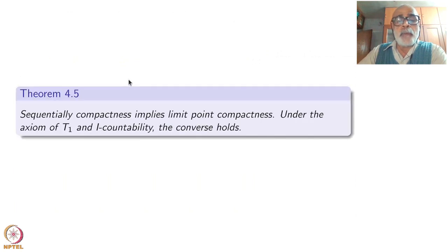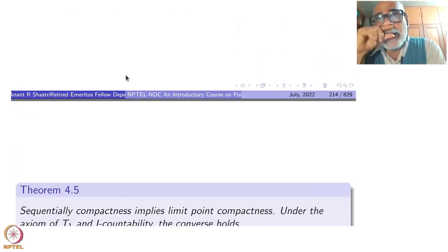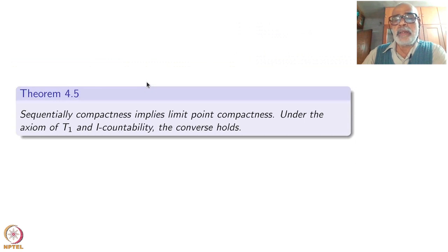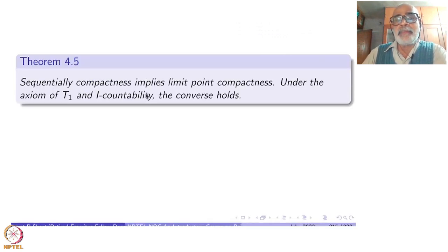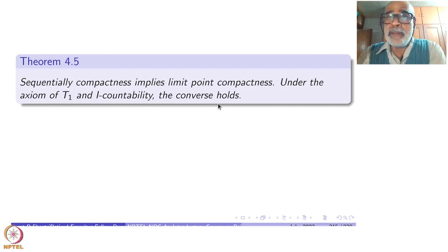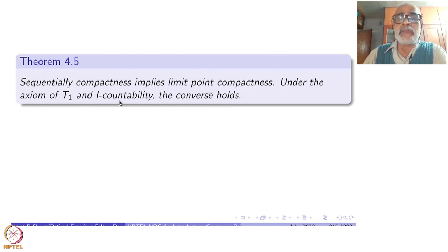So we have proved that under the T1 axiom, countable compactness and limit point compactness are equivalent. Next, a similar result: sequential compactness implies limit point compactness (3 implies 2). Under T1 and first countability, the converse also holds. So: 1 implies 2 always; 3 implies 2 always; 2 is the weakest; under T1, 1 and 2 are the same; under T1 and first countability, 2 and 3 are equivalent.